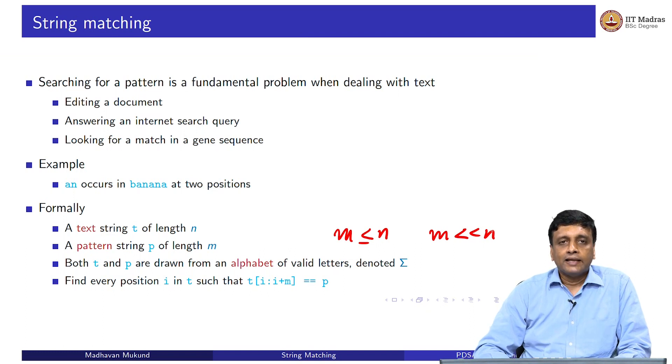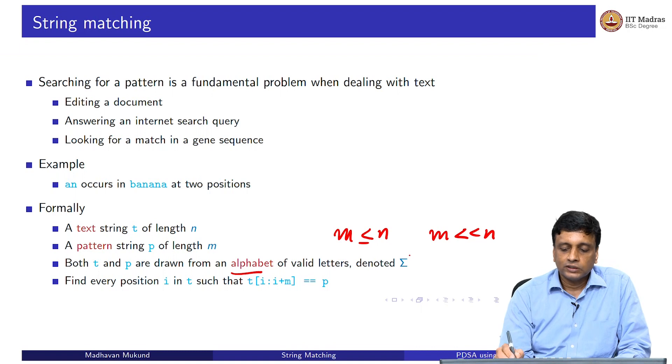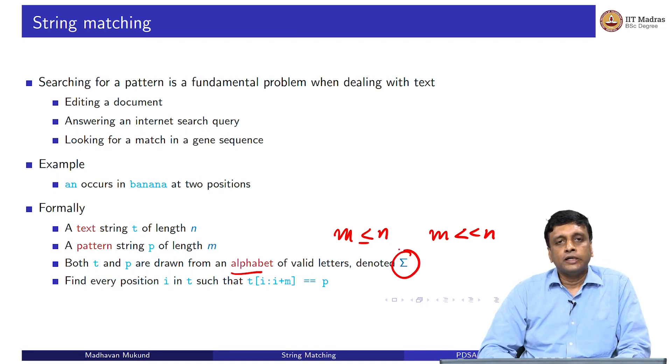These letters that we use come from some set of symbols, which is usually called an alphabet. This Greek letter capital sigma usually denotes the set of valid characters, which I will encounter in the search. In most of our day to day use, we deal with the characters we can type on the keyboard, but you can imagine that you can do it in different languages or over different symbol sets. Some of the algorithms may have a dependence on what the size of this alphabet is.